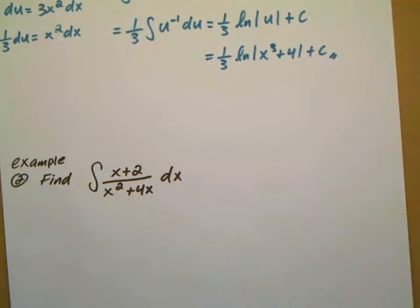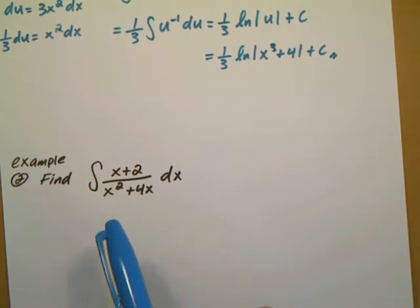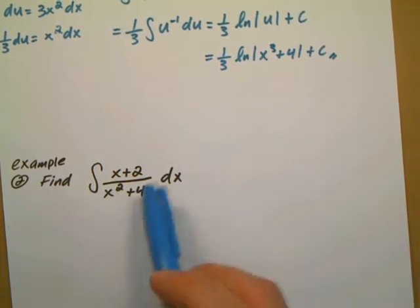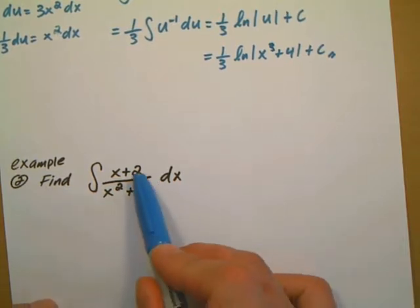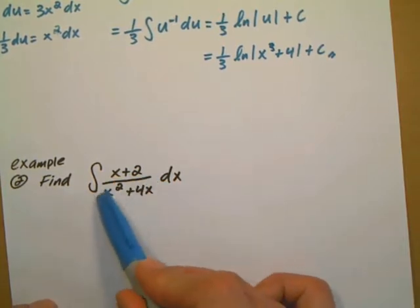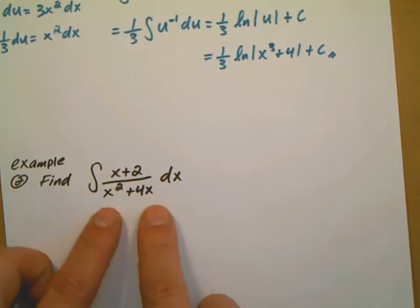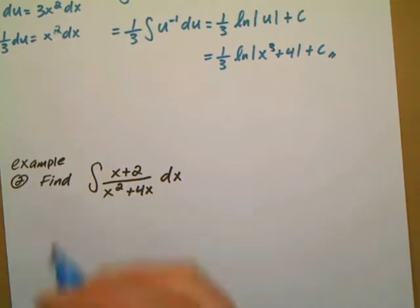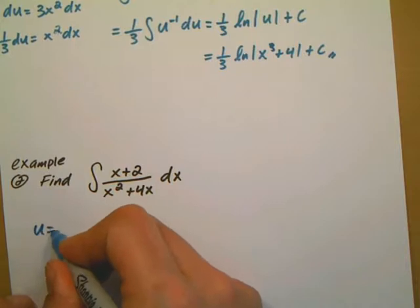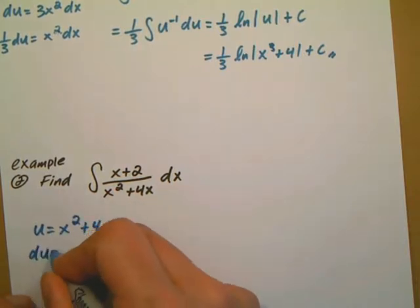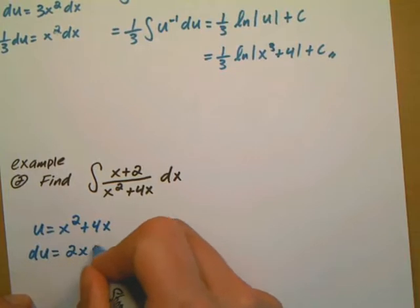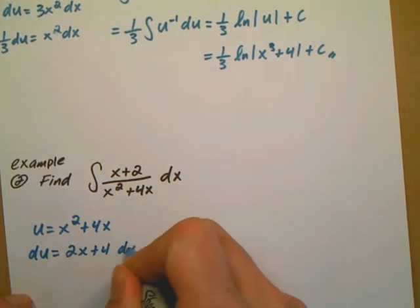Next example. In this one it doesn't seem obvious as to what the integration is going to be, so I just go by the technique which is generally, you want to let u be the biggest exponent term. So this one, the highest exponent is x squared plus 4x. So I'm going to start by doing that. And then the derivative of that, du, is 2x plus 4 dx.